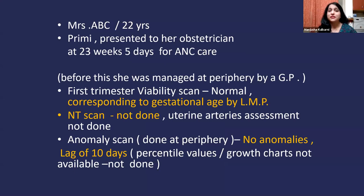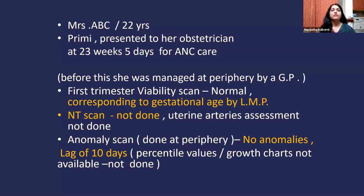This patient, Mrs. ABC, a 22-year-old primigravida, presented to her obstetrician at 23.5 weeks of gestation for her routine antenatal care. Before this, she was managed at the periphery by a general practitioner. Her first trimester viability scan was normal, corresponding to gestational age by LMP.